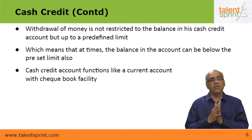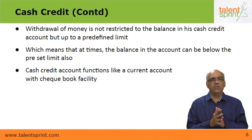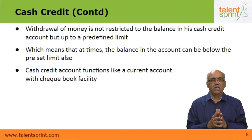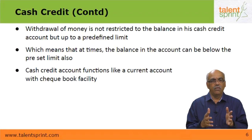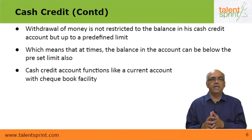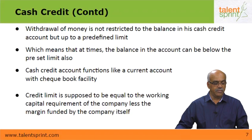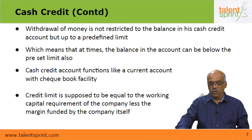A cash credit account basically functions like a current account with a checkbook facility. The only difference is that in a current account, the amount of money the customer can issue checks for is limited to his balance and cannot normally be overdrawn. In a cash credit account, the amount he can draw is determined by the pre-agreed limit with the bank.